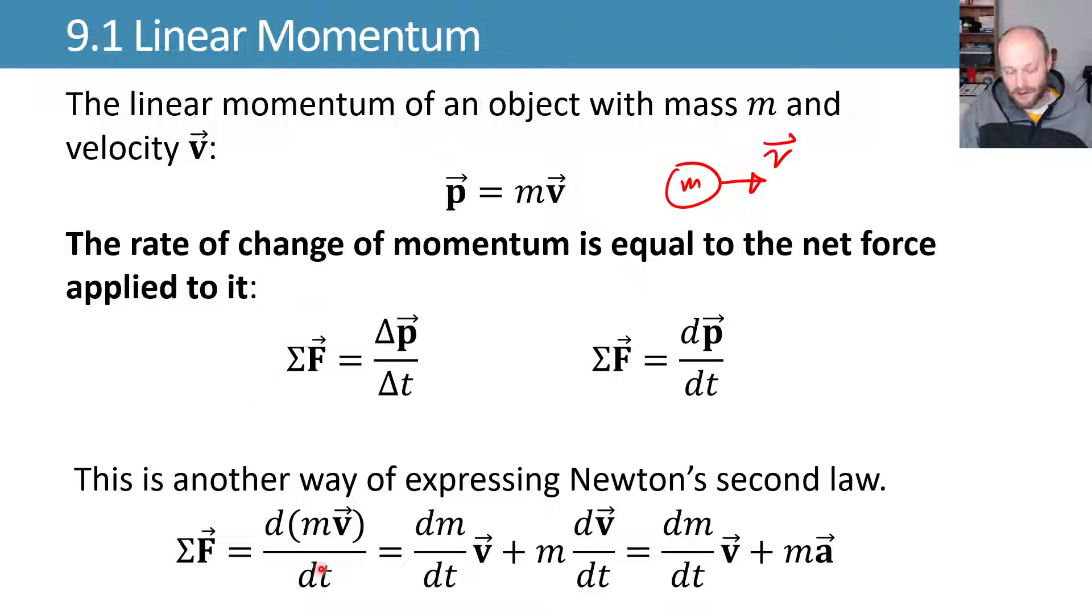If you do a product rule, you take the derivative of the first thing times the second thing, plus the derivative of the second thing times the first thing, and we get dm dt times v plus m dv dt, which simplifies since dv dt is equal to acceleration, to dm dt v plus ma.